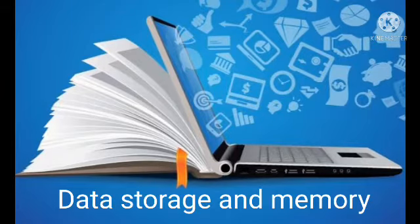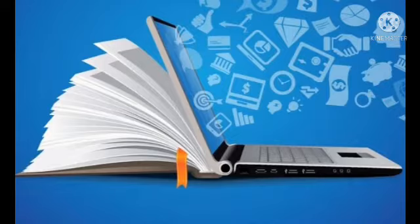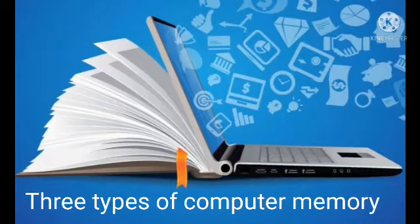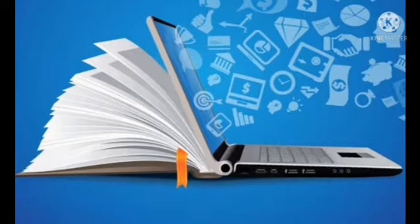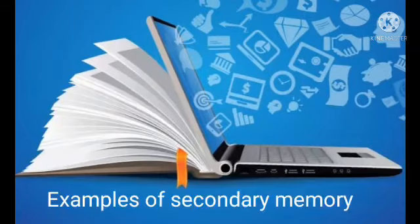In the last class, we discussed about the types of computer memory. There are 3 types of computer memory: primary memory, read-only memory, and secondary memory. Today we are going to see some examples of secondary memory.